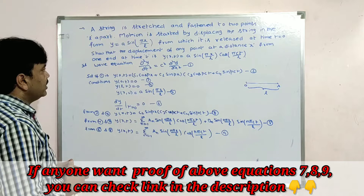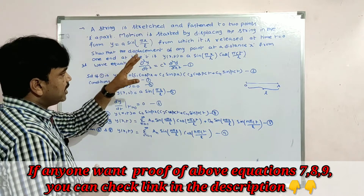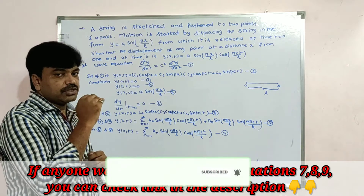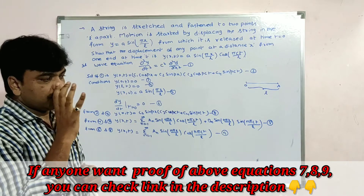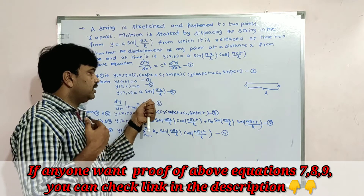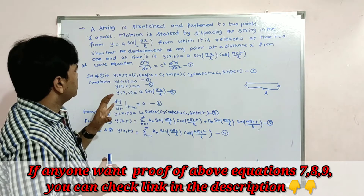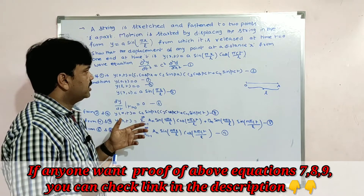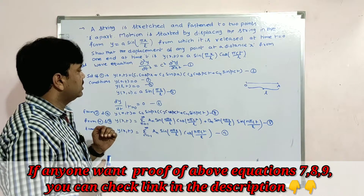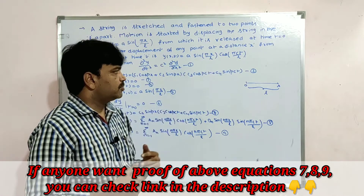Motion is started by displacing the string in the form y = a sin(πx/L), from which it is released at time t = 0. That means the initial displacement at t = 0 is given as a sin(πx/L). We need to show that the displacement of any point at a distance x from one end at time t is y(x, t) = a sin(πx/L) · cos(πct/L).